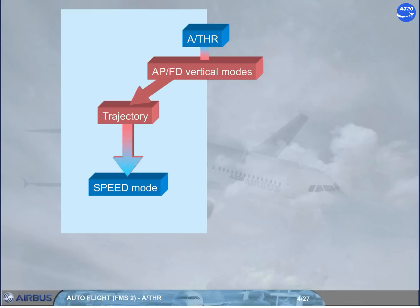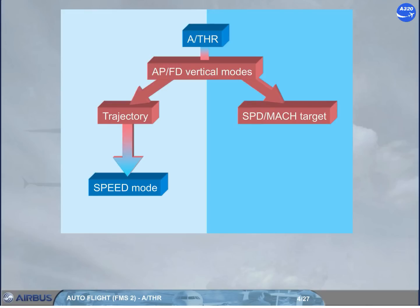When the autopilot flight director vertical mode adjusts the aircraft pitch in order to keep a target speed or Mach — e.g., climb or descent — the autothrust is in thrust mode.